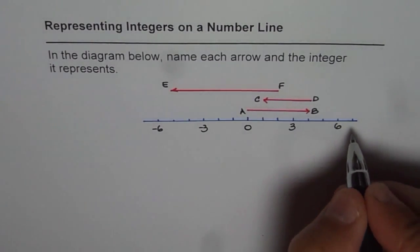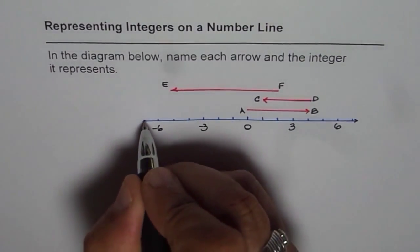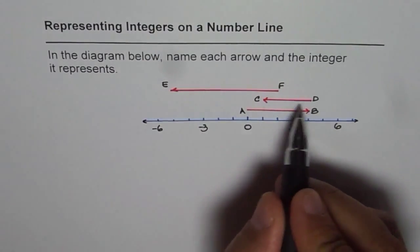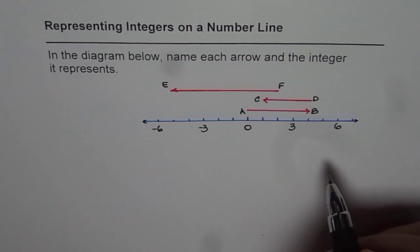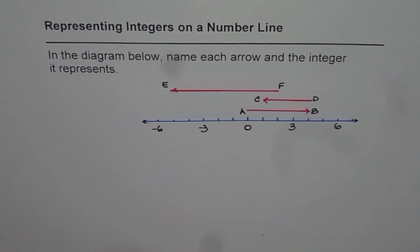In color blue we have the number line, and in red color we have shown representation of integers. You need to write down the name of each integer and its value. Let's start.